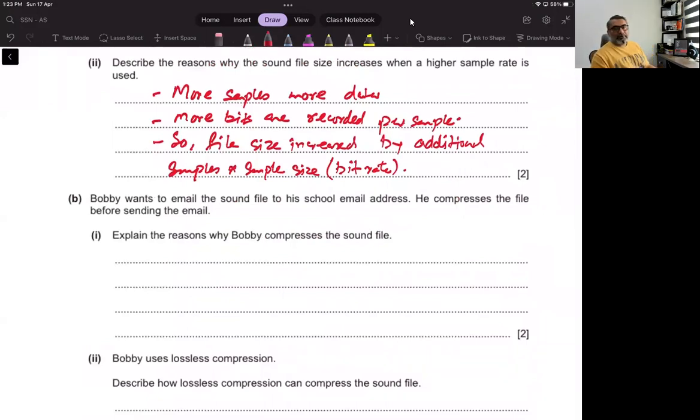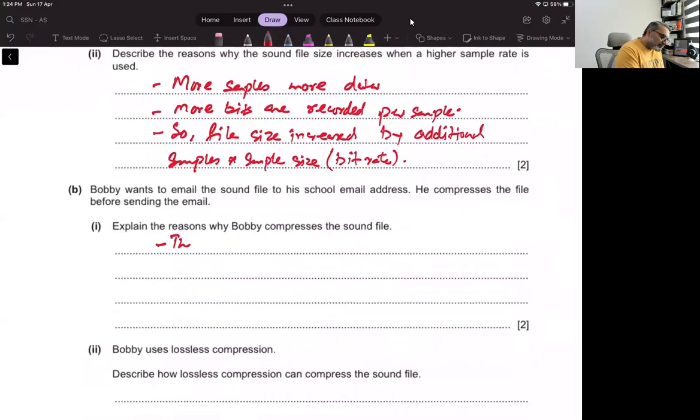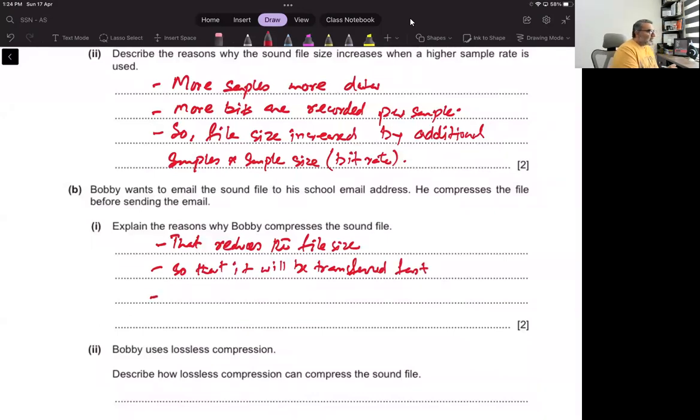Bobby wants to email the sound file to his school email address. He compresses the file before sending. Explain the reason why Bobby compresses the sound file. That reduces the file size so that it will be transferred fast and will take less space, as compared to its original size.